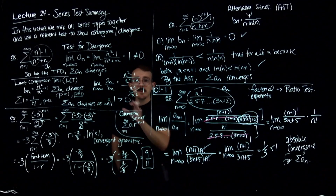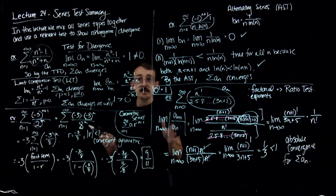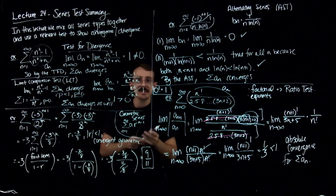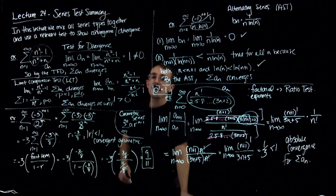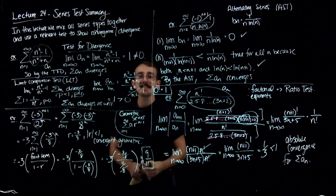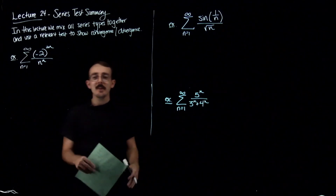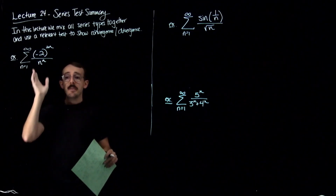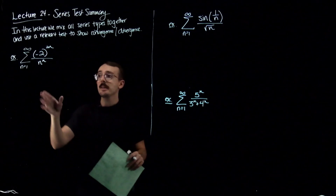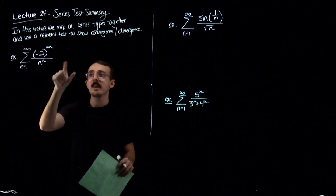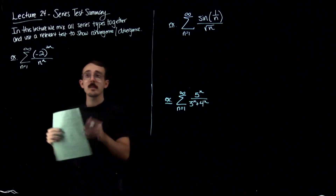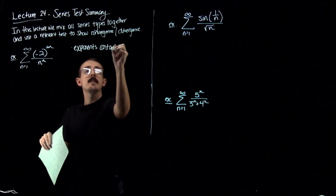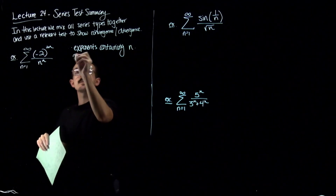So how did you do on those? Were you able to identify at least which test goes with what? I hope it helped to point out different features I see in each one that would indicate what test to use. Here are three more examples — go give them a shot and then come back when you're ready. For this first example, I'm thinking the root test because I see a lot of things raised to the power of n, or n is part of the exponent. Exponents containing n — that's generally a giveaway for the root test.